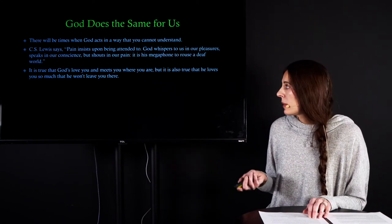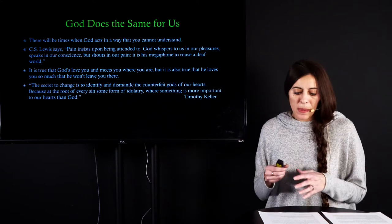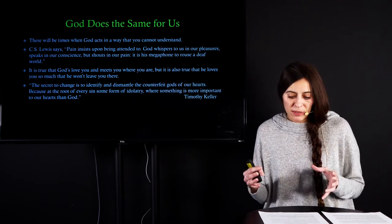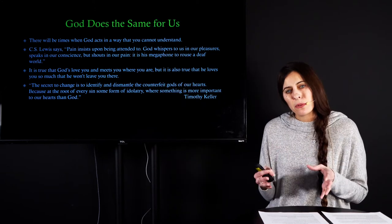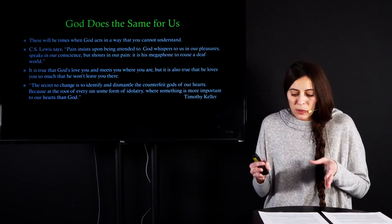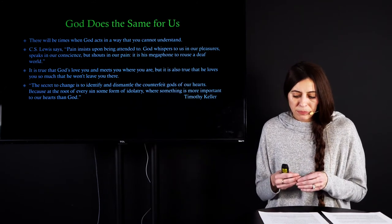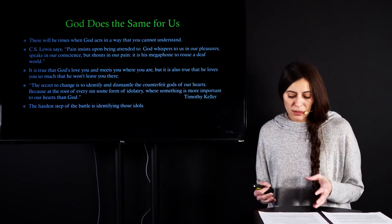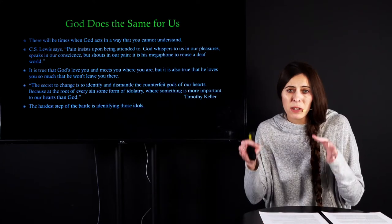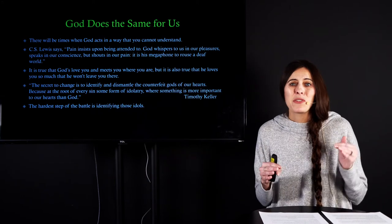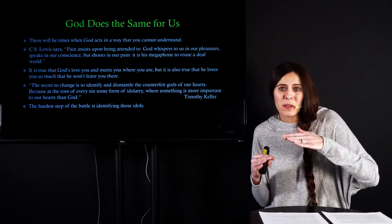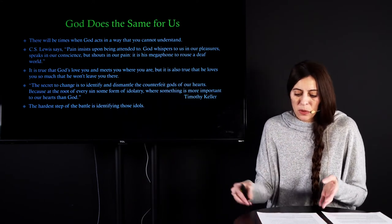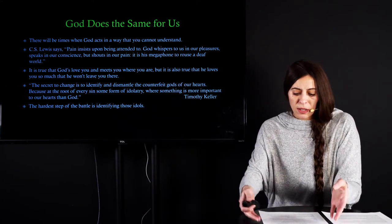And so one of the hardest things that can happen is what is the secret to change? Well, the secret to change is identifying. It's identifying and it's dismantling these counterfeit gods in our hearts because at the root of every sin is this form of idolatry. It's where we love something else more than God. And so finding idols, they can be really difficult. It's one of the hardest steps in the battle is how do we find idols, especially if you are close to God, because like I said before, they don't want to be known. They want to go unnoticed. They want to go in and steal our joy little by little. They don't want to be ripped out. And so the best way not to be ripped out is not to be identified.